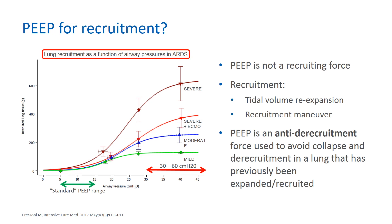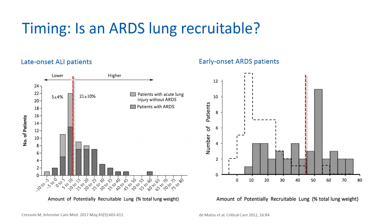The associated graph demonstrates lung recruitment as a function of airway pressure, presenting grams of lung tissue on the y-axis which regain inflation as a result of applied airway pressure on the x-axis, with mild ARDS on the green line, moderate ARDS on the blue line, severe ARDS with ECMO on the light red line, and severe ARDS without ECMO on the dark red line. Two studies in larger sample sizes measured the amount of potentially recruitable lung using the CT scan method in early onset and late onset ARDS patients. The amount of potentially recruitable lung is higher for early onset ARDS, and both studies showed large variability between patients. Hence, the recruitment strategy should be adapted to the amount of potentially recruitable lung.